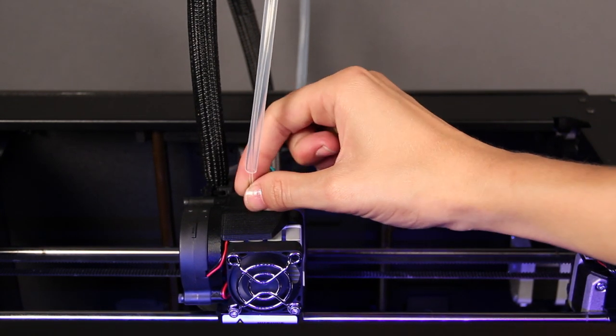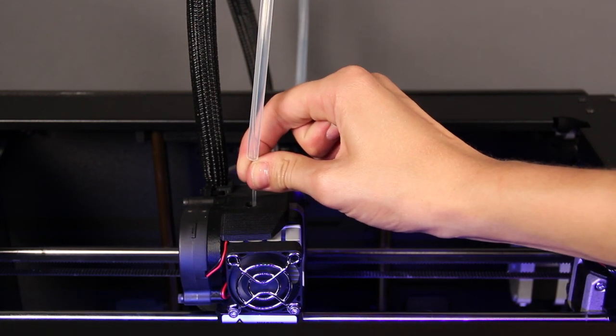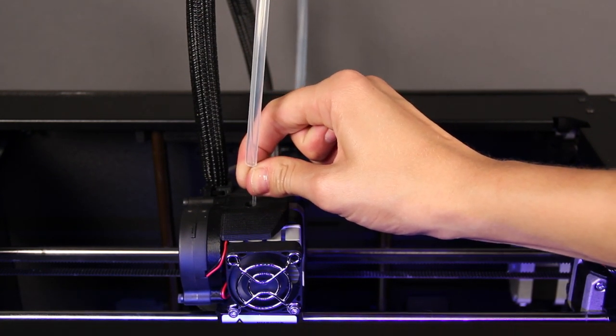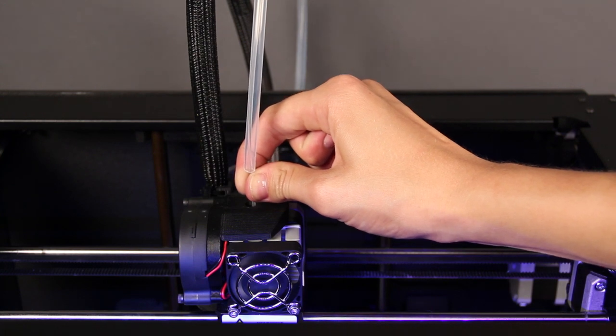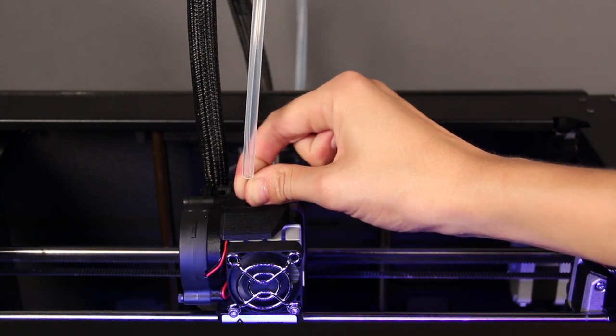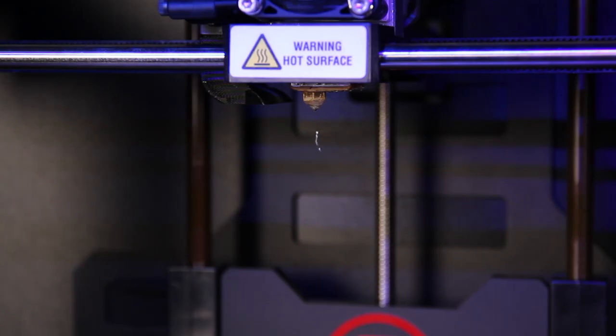Make sure the filament goes into the center and doesn't get caught on the edge. You'll have to use some force and maintain pressure on the filament until you feel the motor pulling it in. You can then let go and watch for the noodle of filament to push its way out of the nozzle.